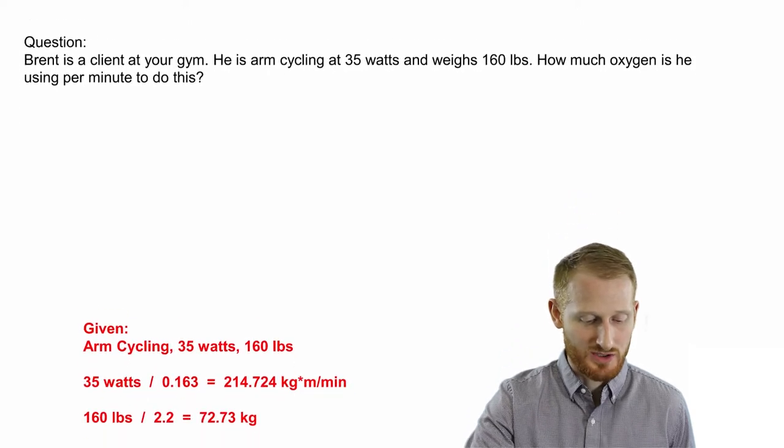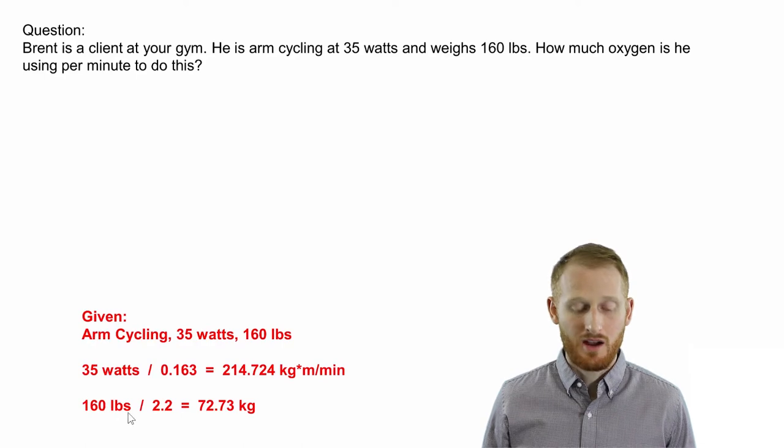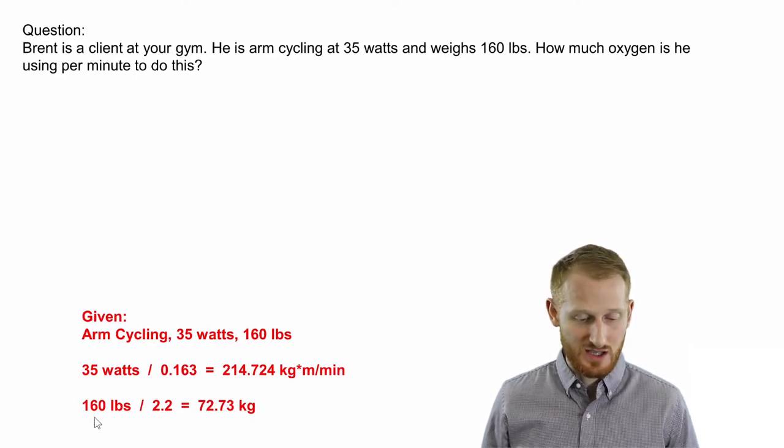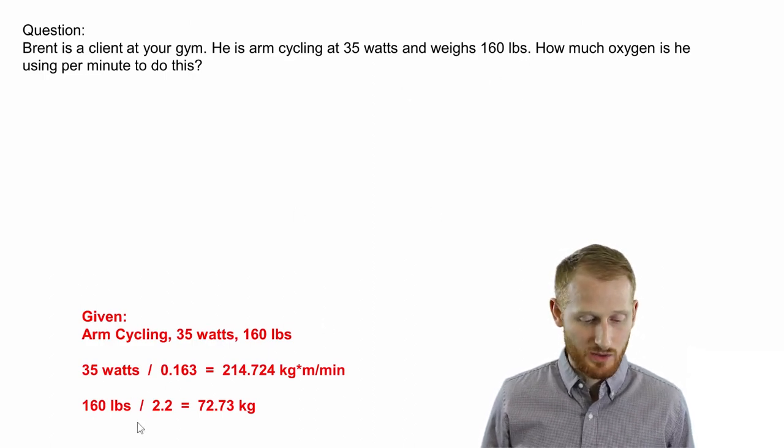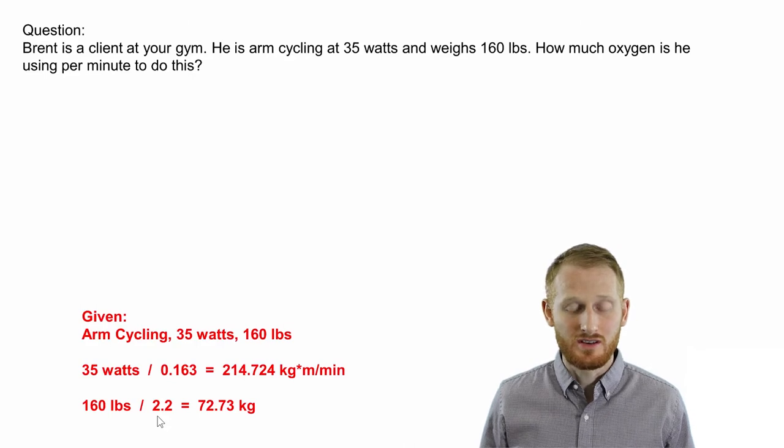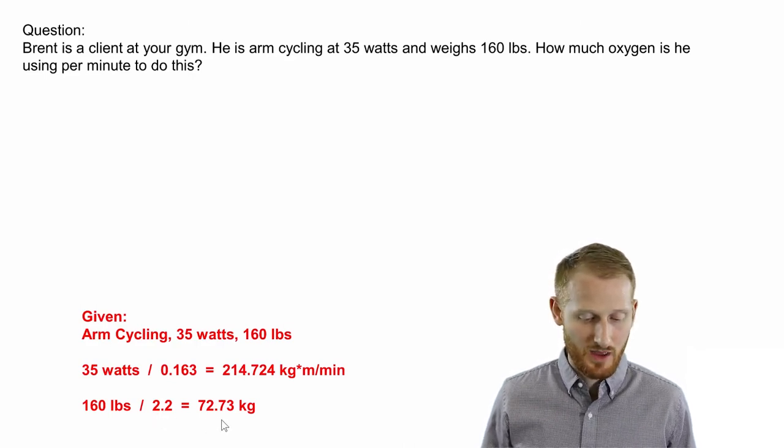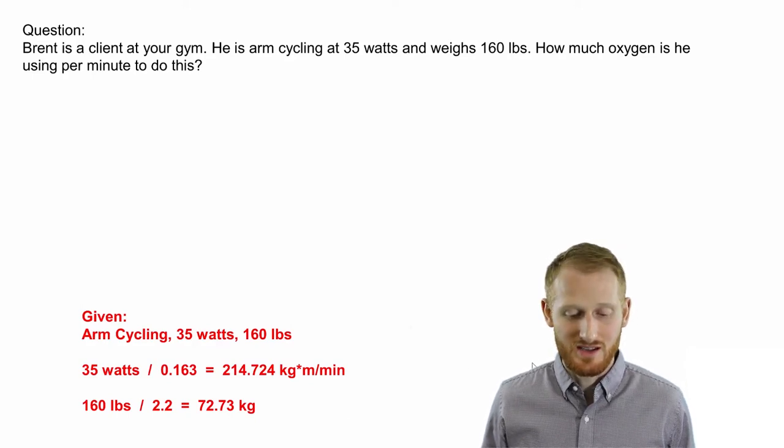The next thing I'm going to do here is I'm going to convert his body mass from pounds to kilograms, and so all I'm going to do is take his 160 pounds that we have in the question up here, divide that by 2.2, which is the standard conversion factor for pounds to kilograms, and get 72.73 kilograms as his body mass.